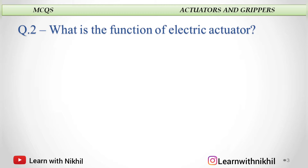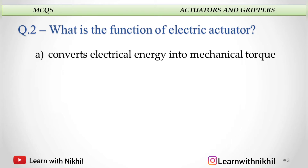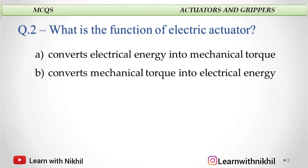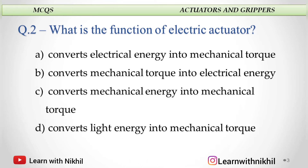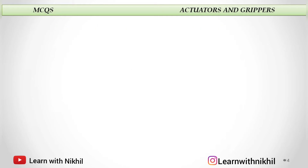What is the function of an electric actuator? A. Converts electrical energy into mechanical torque. B. Converts mechanical torque into electrical energy. C. Converts mechanical energy into mechanical torque, or D. Converts light energy into mechanical torque. And the answer is: converts electrical energy into mechanical torque.